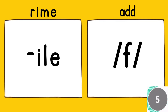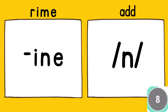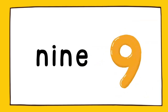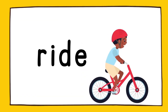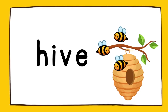The rhyme is ile, add f. File. The rhyme is ine, add n. Nine. The rhyme is ide, add r. Ride. The rhyme is ive, add h. Hive.